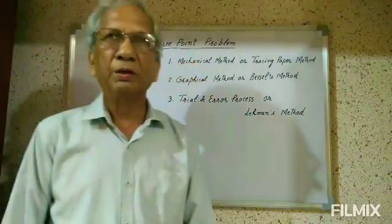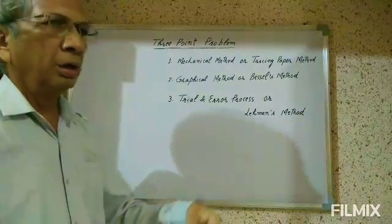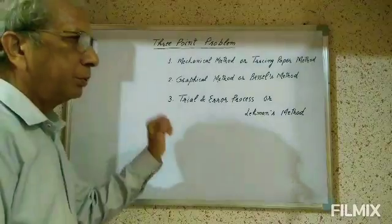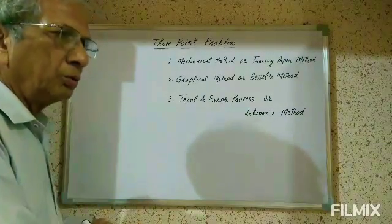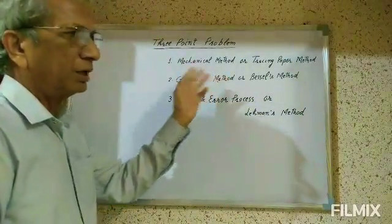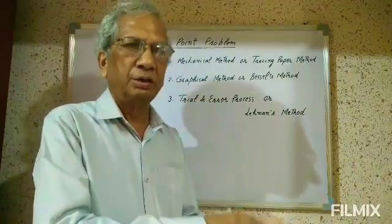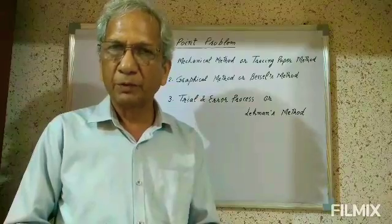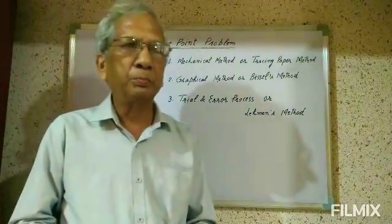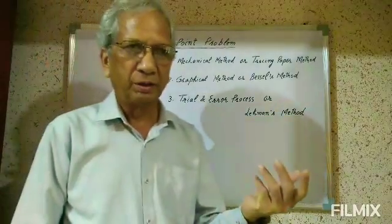First I want to discuss what is the three-point problem. The three-point problem arises when in the field there are three points and we have to find out a fourth point located on the ground, but that fourth point is not located on the drawing sheet. The three points are on the drawing sheet, but those three points on the ground are inaccessible — due to any reason we cannot set our table at any one of the three points. Had we been able to set the table at these three points, we would not need the three-point problem; instead we could apply the intersection method to find the fourth point.